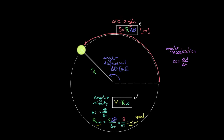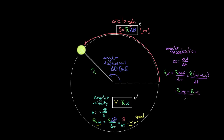Multiplying both sides by r, we get r times alpha equals r times delta omega over delta t. Since r times delta omega is r times (omega_final minus omega_initial), we can distribute: this equals r times omega_final minus r times omega_initial, all divided by the time it took. But r times omega is the speed, so this becomes the final speed minus the initial speed over the time — the change in speed per time. So r times alpha equals the change in speed over time.